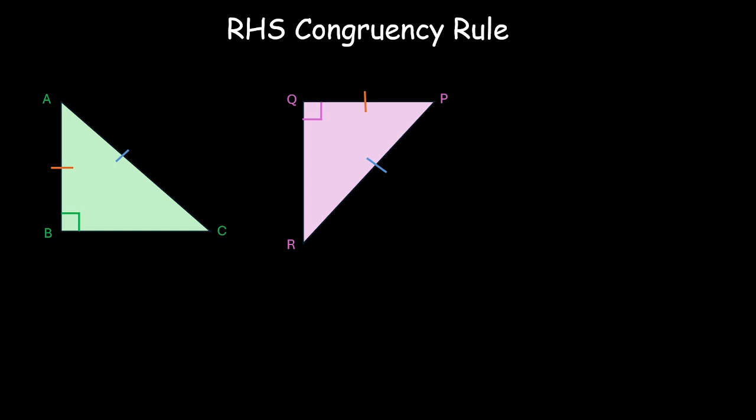And more so, also because this is actually SSA, right? See, this side is equal to this side and this side is equal to this side and then this angle B is equal to this angle Q over here. So, this is nothing but SSA and we know for a fact that SSA is not a congruency rule. It does not work.